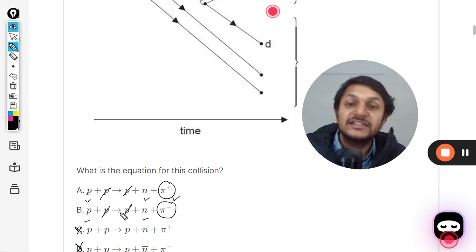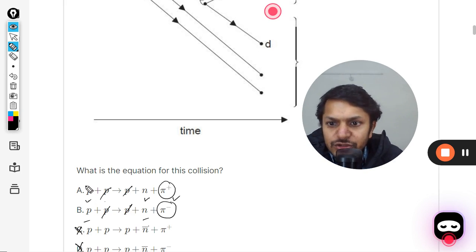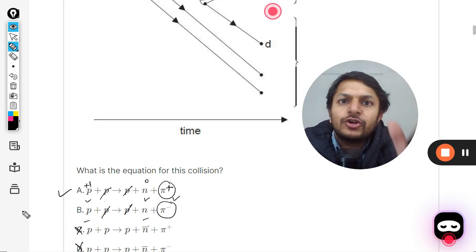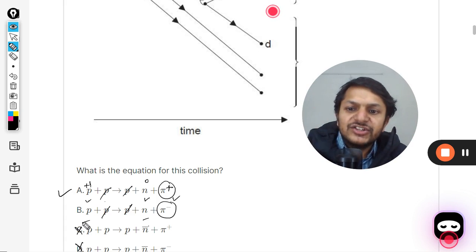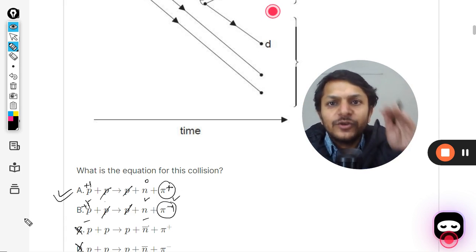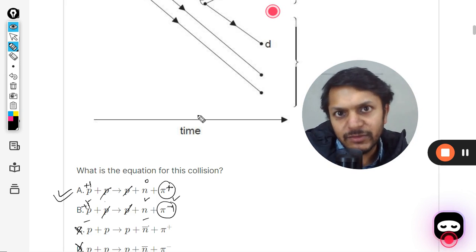So this is both of them are wrong. So this is correct, either this or this. The only problem is that this is pi minus and this is pi plus. Charge can be conserved here, let us see. So this is plus one, neutron is zero, and this is plus one. It means that A will be the correct option because in B the charge is not conserved. This is plus one and this is minus one and that is not possible. Clearly the answer will be A.